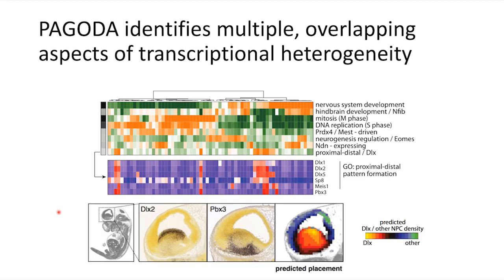Indeed, when we look to see where genes upregulated in this proximal-distal pattern formation aspect are expressed — such as DLX2 and PBX3 — they do seem to mark a spatially distinct location in the brain, consistent with what is known about tangential migration of neural progenitor cells in the developing mouse brain. So although we have this earlier and more mature neural progenitor heterogeneity in neuronal maturity that is transcriptionally encoded and identifiable through our analysis, a cell's spatial location within the mouse brain can provide an alternative overlapping and cross-cutting aspect of transcriptional heterogeneity made apparent through our application of PAGODA.